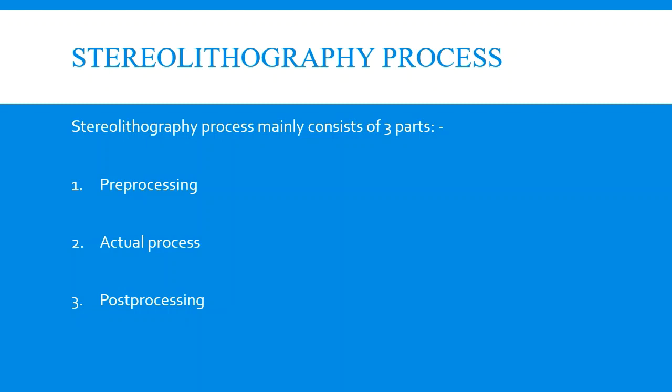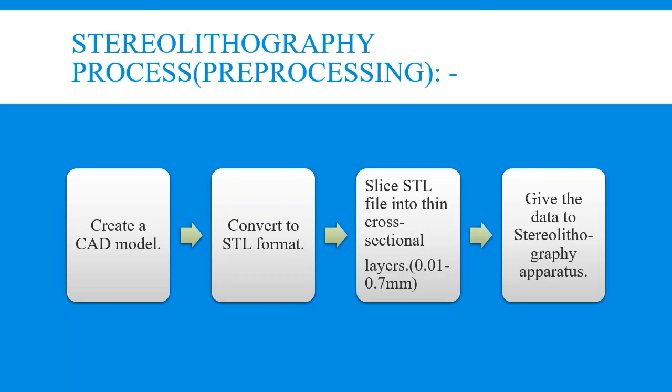Stereolithography mainly consists of three parts: pre-processing, the actual process of stereolithography, and post-processing. Pre-processing involves the creation of a CAD model, which can be created with any commercial CAD software like SolidWorks or CATIA. The next step is to convert this CAD model into STL format — many commercial packages have a built-in option for this. The file is then sliced into thin cross-sectional layers with software like Cura. The thickness of the layer determines the resolution and finish of the object, and this sliced file is then fed to the stereolithography apparatus.